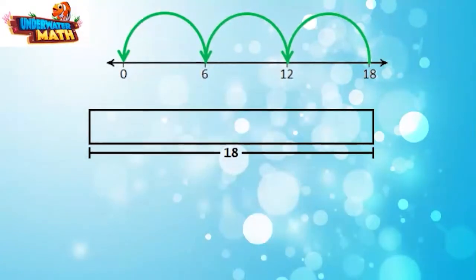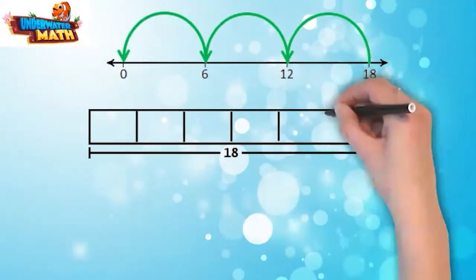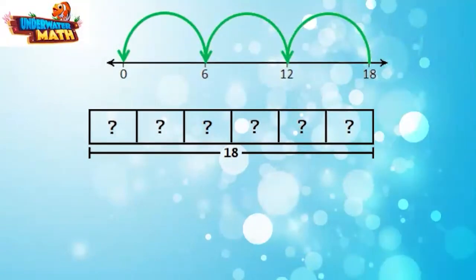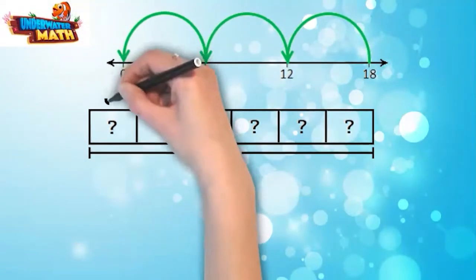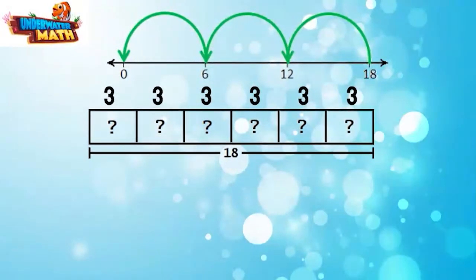We have a long rectangle with a length of 18. We will divide it into six smaller sections. Each section represents one dormitory. We need to find the length of each smaller section. I know that if I add up three six times, I get to 18, so each smaller section must be equal to three.